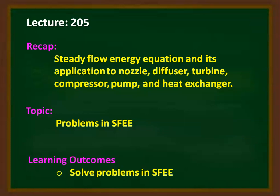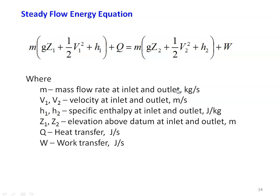The learning outcome for this lecture: at the end of the lecture, the student will be able to solve problems on the steady flow energy equation. We recall the steady flow energy equation in general form. The terms on the left-hand side are the energy into the system, and terms on the right-hand side are the energy leaving the system. The steady flow energy equation is obtained by applying energy balance to a thermodynamic system, and this is the full form of the equation. Based on the data given, we can neglect the parameters which are not given in the problem.